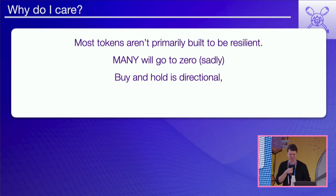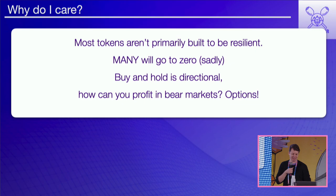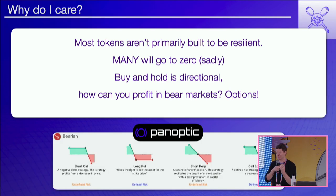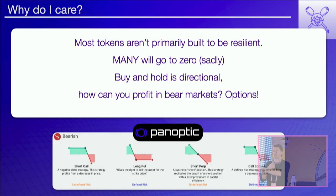My pitch — and this is the only place I'll talk about my own protocol — is that you can profit in bear markets using options. I'm the CEO of an options protocol called Panoptic. If you have a bearish view on tokens, there's a wide variety of strategies: sell calls, go short perps, buy puts. Options open up strategies that allow you to profit from a token going to zero, as opposed to just watching it fall. Panoptic will allow you to short all of these tokens.